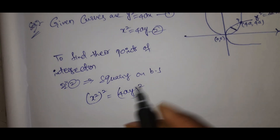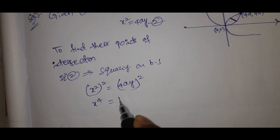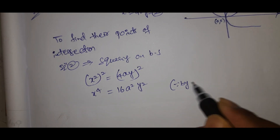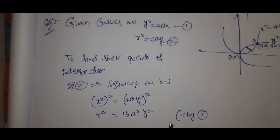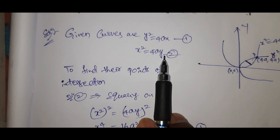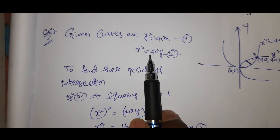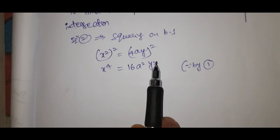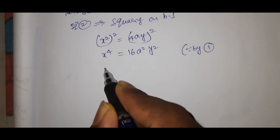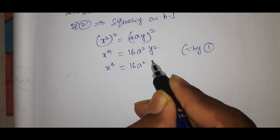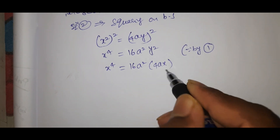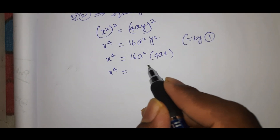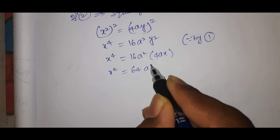Squaring equation (2): x²=4ay, squaring both sides gives x⁴=16a²·y². Substituting y² from equation (1), we get x⁴=16a²·(4ax), which simplifies to x⁴=64a³x.